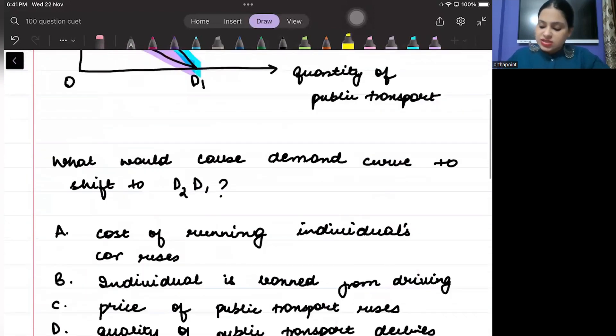So, don't you think that quantity is reducing? So, actually, this shift, it actually represents a decrease in demand of commodity.